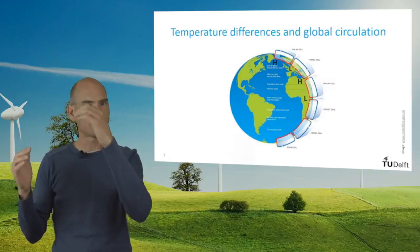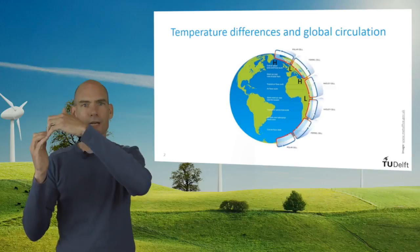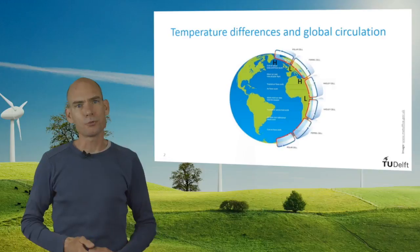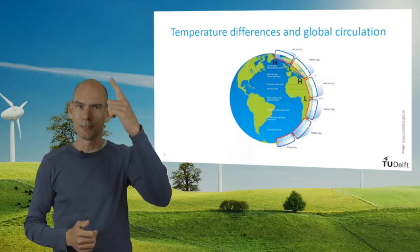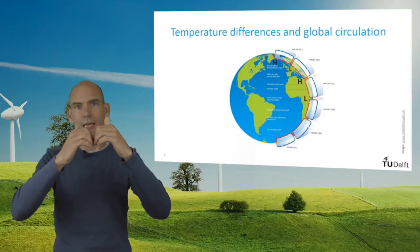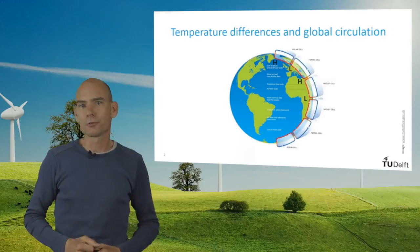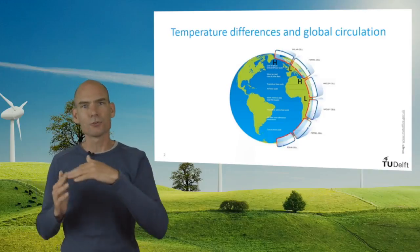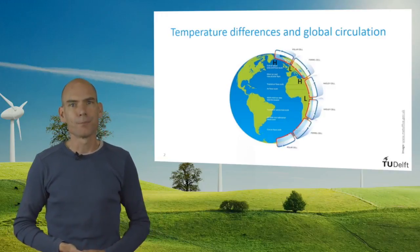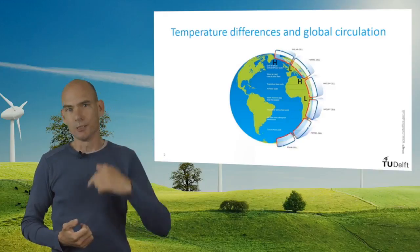Eventually it will hit colder air coming from the direction of the poles. At this point the two air flows sink back to the Earth's surface. A similar but opposing circulation can be seen at the poles. Cold air at the North Pole sinks and has to move to the south, where it encounters air coming from the south and these two flows have to rise. Because of the thickness of the atmosphere there is room for three of those cells between the equator and each pole.